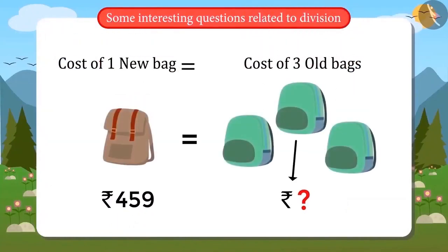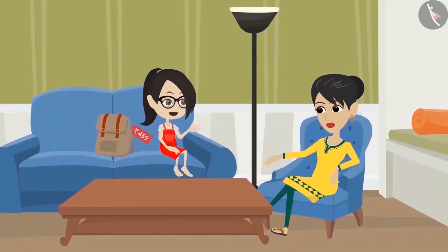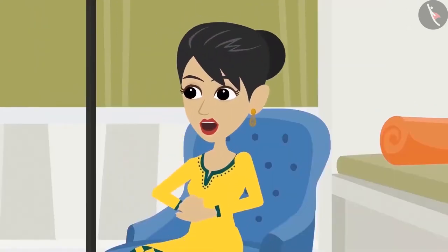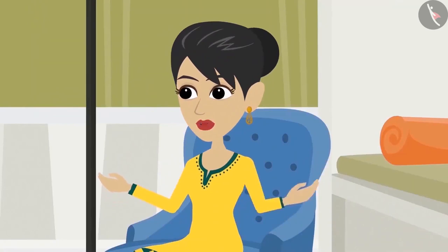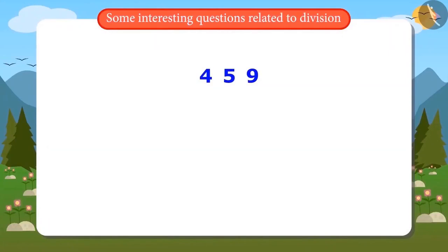What was the cost of my old bag? The cost of this bag is equal to your 3 old bags. Now you can find the cost of the old bag yourself. Got it! If 3 bags cost 459 rupees, so to find out how much one bag is worth, I divide 459 by 3. Right Mummy? Perfect Vandana. Now quickly find out and tell me the cost of your old bag. To divide 459 by 3, I first write it like this. But how will I divide such a large number by 3?